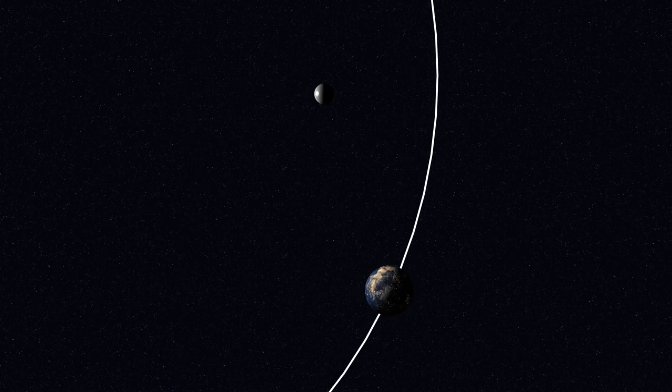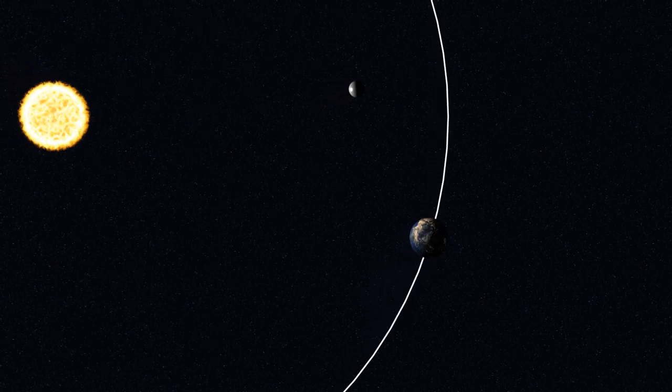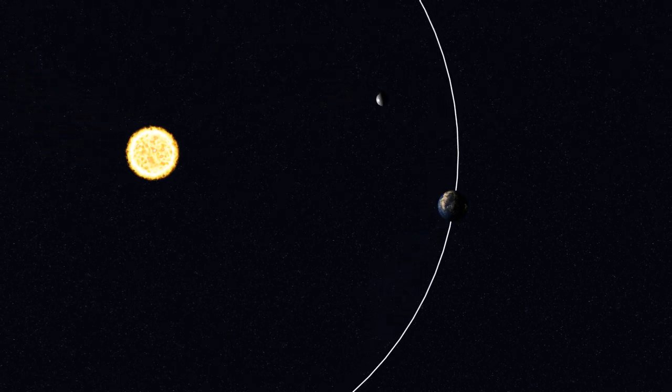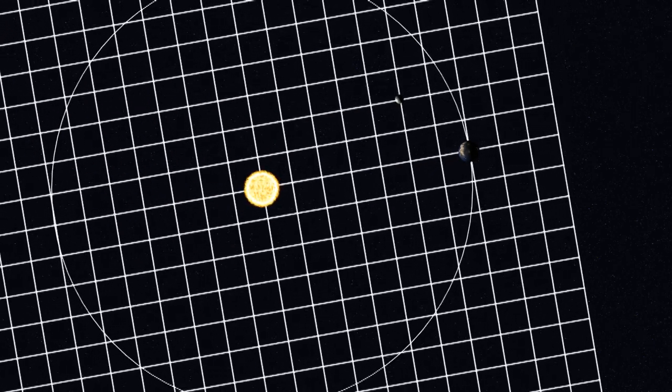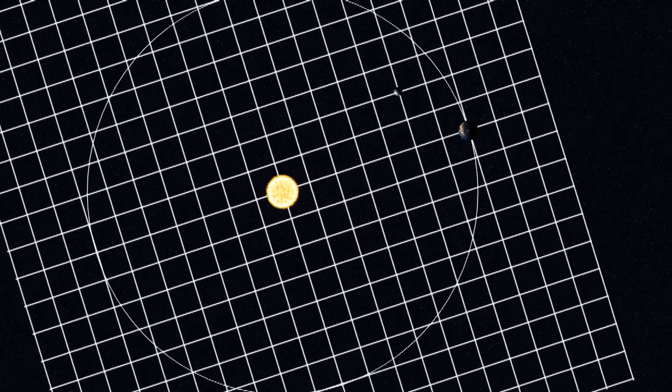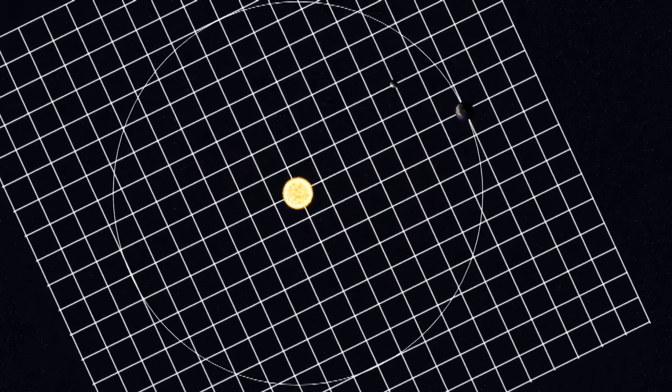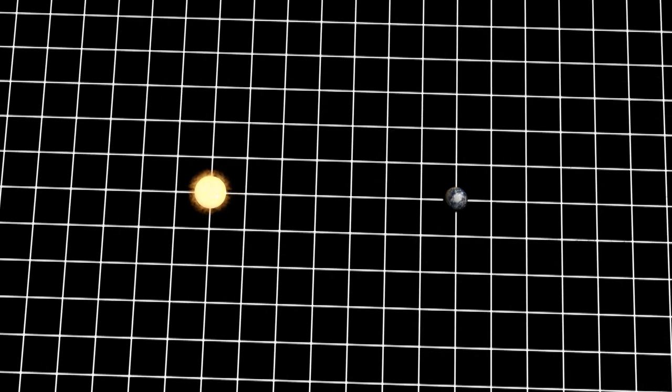Assume we have an object that orbits the sun along with the earth. We're going to use a rotating coordinate system. This rotates at the same speed as the earth moves. So in this coordinate system the earth doesn't move.